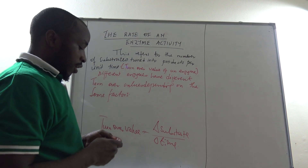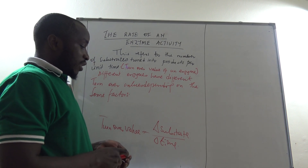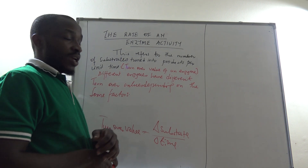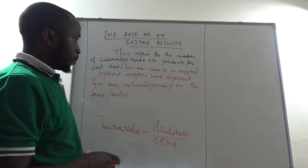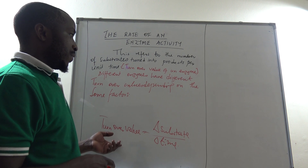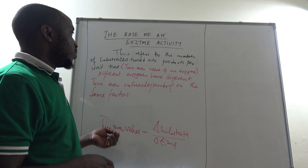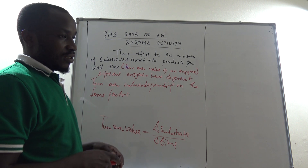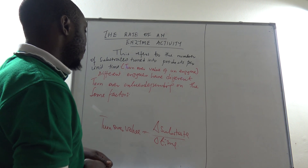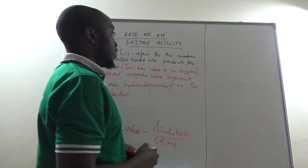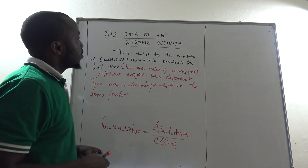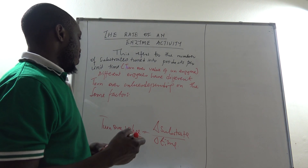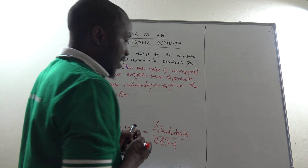How much time has an enzyme taken, and how many substrates that enzyme has acted upon — that is the turnover value. We shall do some experiments to search for this when we use the catalase enzyme. The rate of a chemical reaction differs from one factor to another.